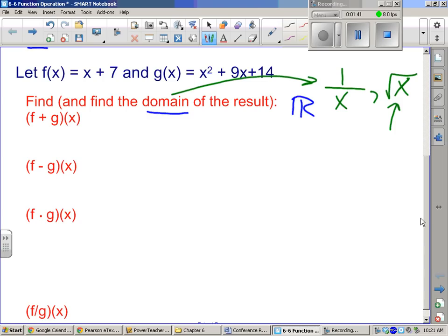Alright. Let's check this one out. f plus g. So we're going to take the f function and add the g function to it. So it's just x plus 7 plus x squared plus 9x plus 14. That seems pretty simple. Yeah, it is. So now we add our like terms. I'm going to start with x squared. And then I have 9x and x is 10x. And then I have 14 and 7 is 21.